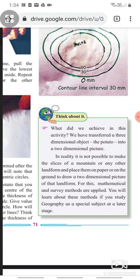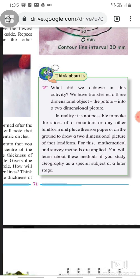In reality, we have transferred a three-dimensional object, the potato, into a two-dimensional picture. In reality, it is not possible to make the slices of a mountain or any other landform and place them on paper or on the ground to draw a two-dimensional picture of that landform.